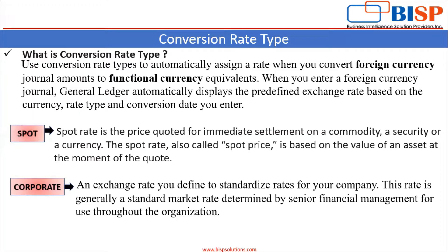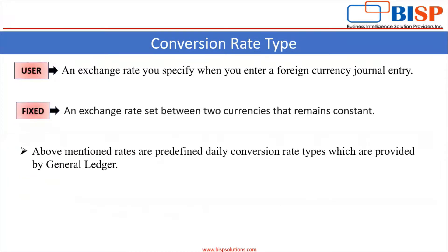Second is corporate rate — an exchange rate you define to standardize rates for your company. This rate is generally a standard market rate determined by senior financial management for use throughout the organization. Third is user rate type — an exchange rate you specify when you enter a foreign currency journal entry. Fourth is fixed rate type — an exchange rate set between two currencies that remains constant.